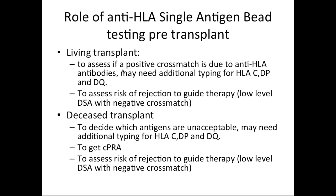The roles of single antigen bead: in living transplant, assess whether a positive CDC or flow crossmatch is due to anti-HLA antibodies — you may need additional typing for HLA-C, DQ, or DP. After transplant, assess rejection and guide therapy. You can also gauge rejection risk from the breadth of anti-HLA antibodies even without donor-specific antibodies. In deceased donor transplants, if you have the single antigen bead beforehand, you can label unacceptable antigens as done in the US, perform additional C/DQ/DP typing, and calculate the CPRA.